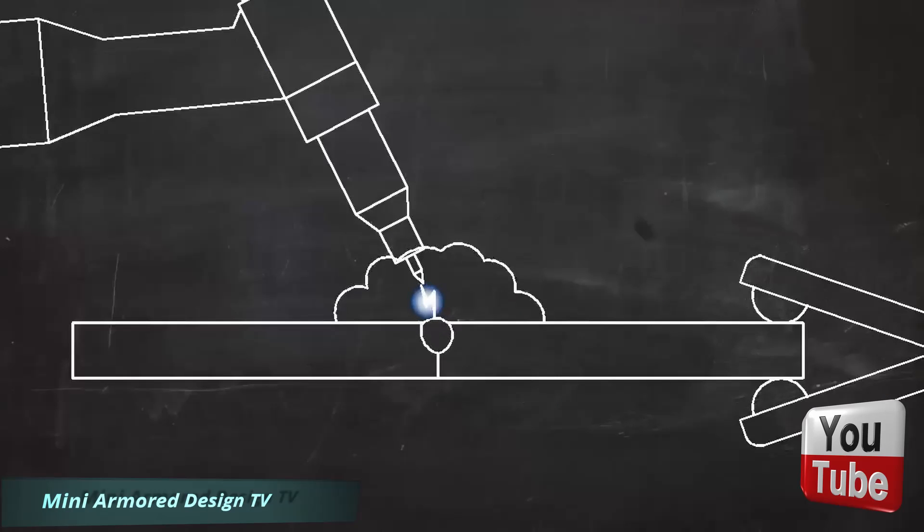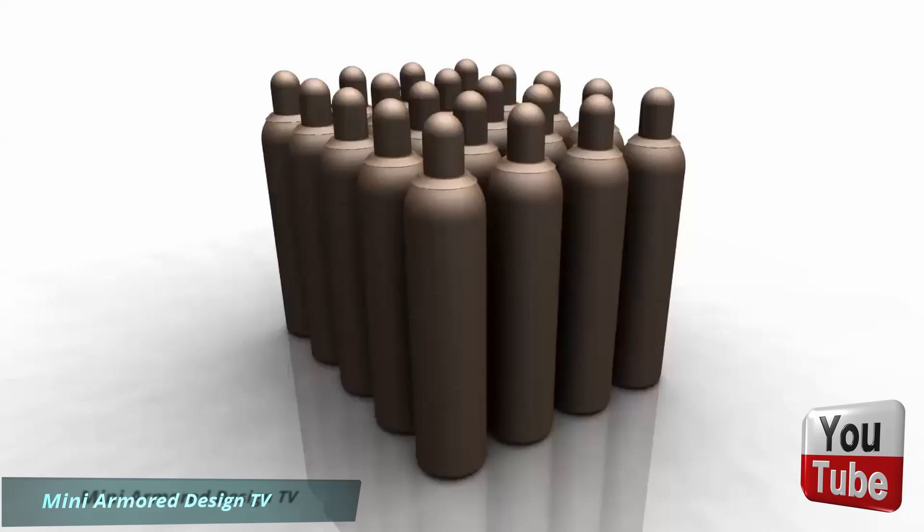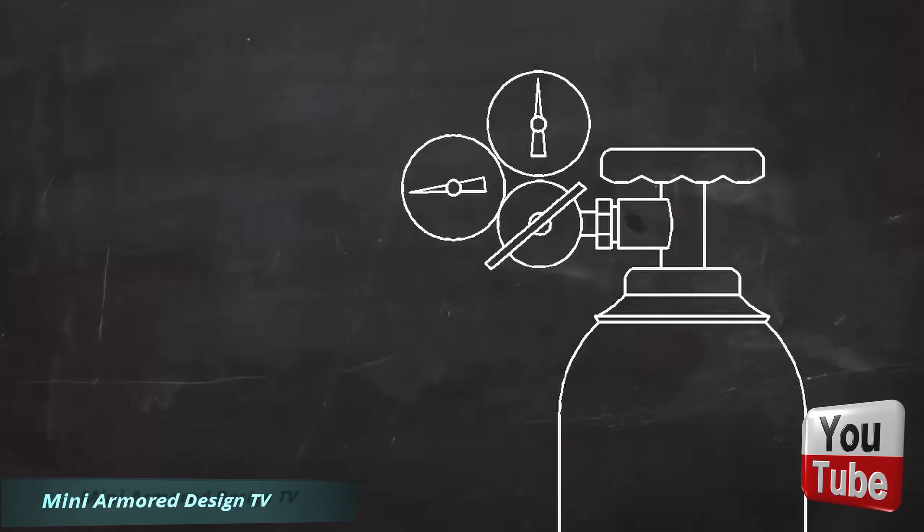In TIG welding, the molten metal is protected by a shielding gas. This gas, usually argon and sometimes helium or other gases, keeps the molten metal from reacting with oxygen and water vapor in the atmosphere. This shielding gas is stored in high-pressure cylinders. The pressure is reduced to a usable level by a device called a regulator. The shielding gas flows through a hose and comes out right at the point of the weld.